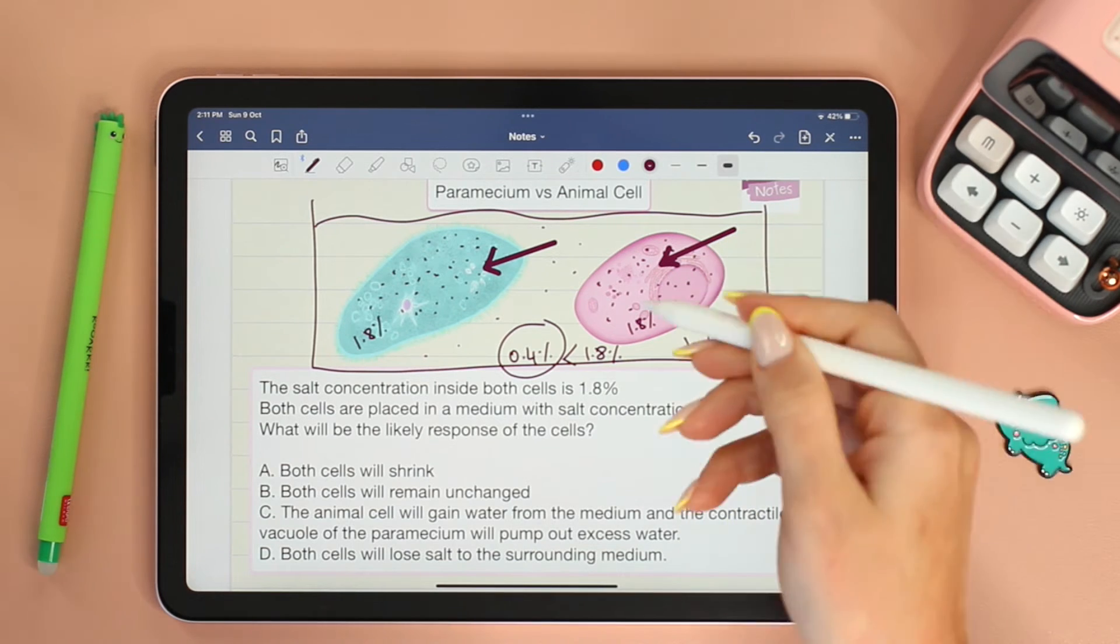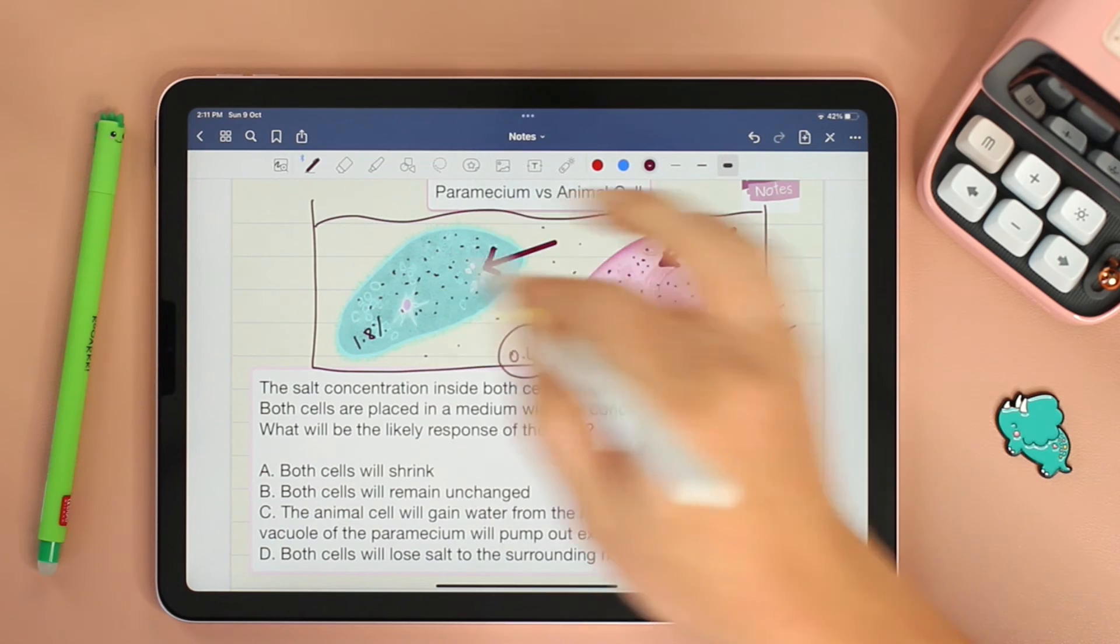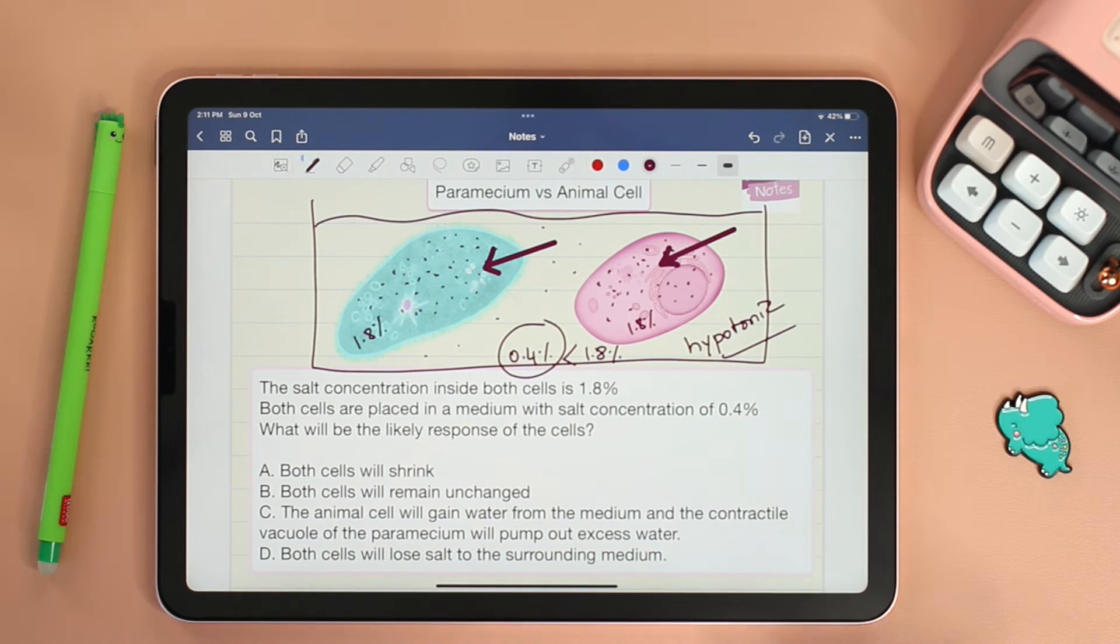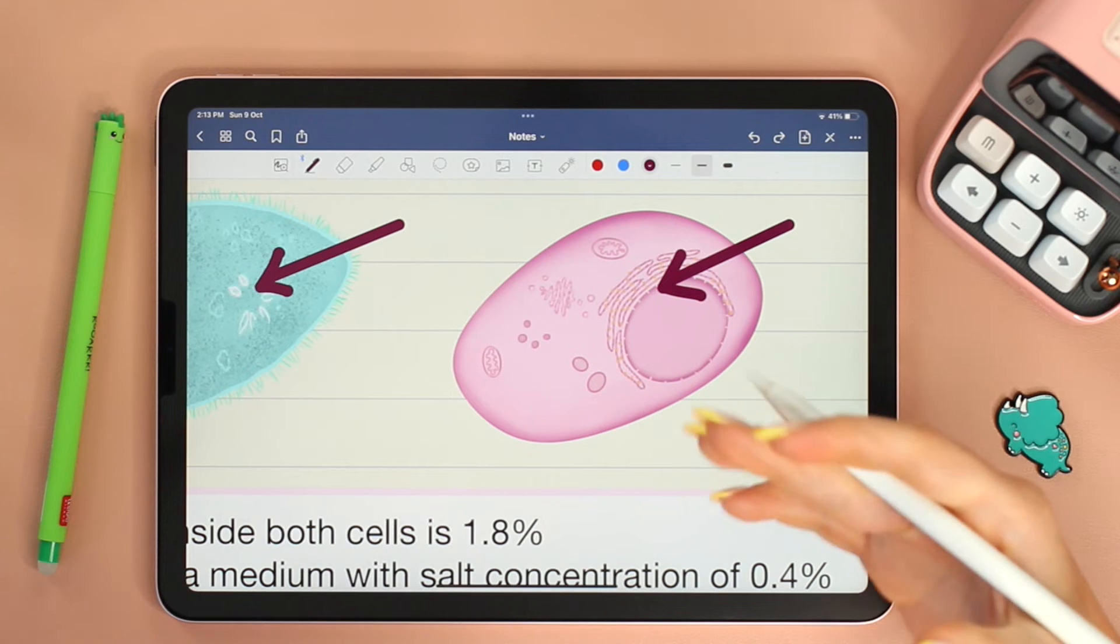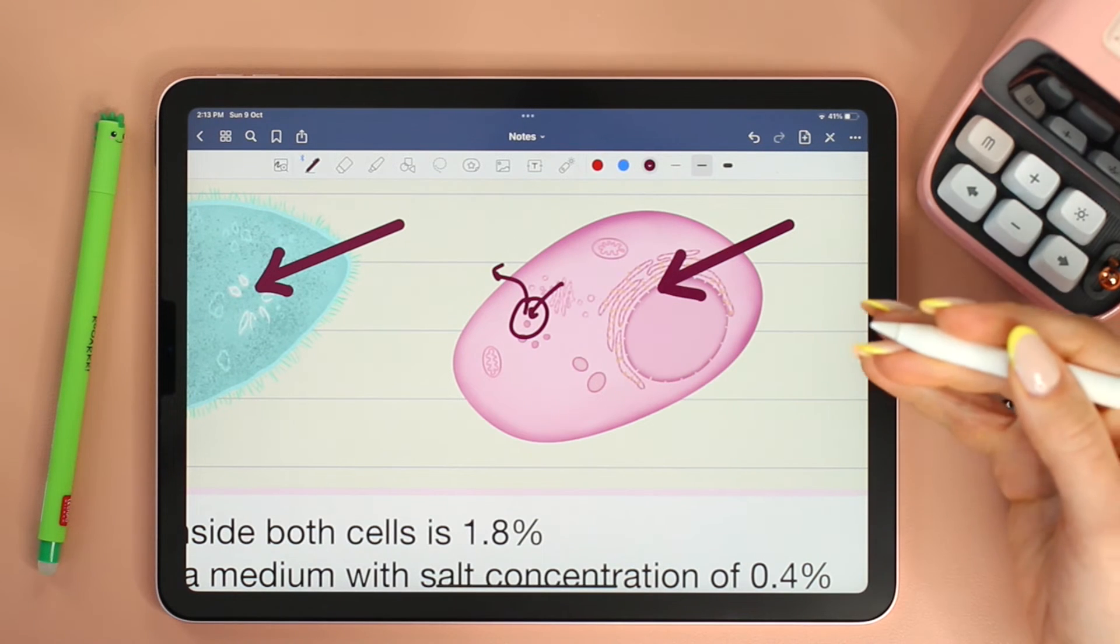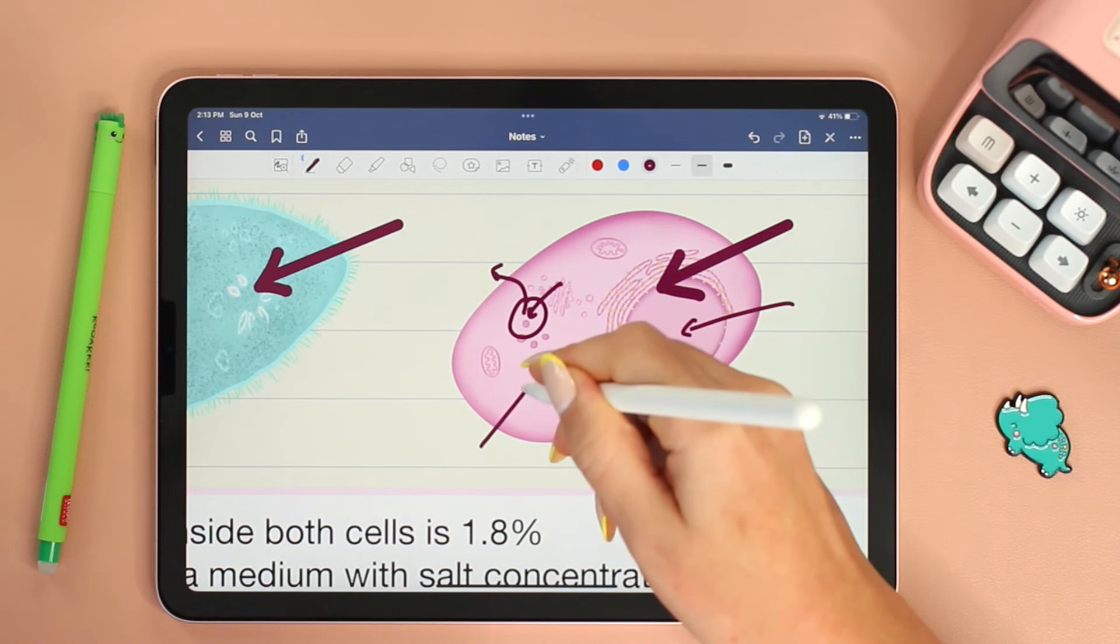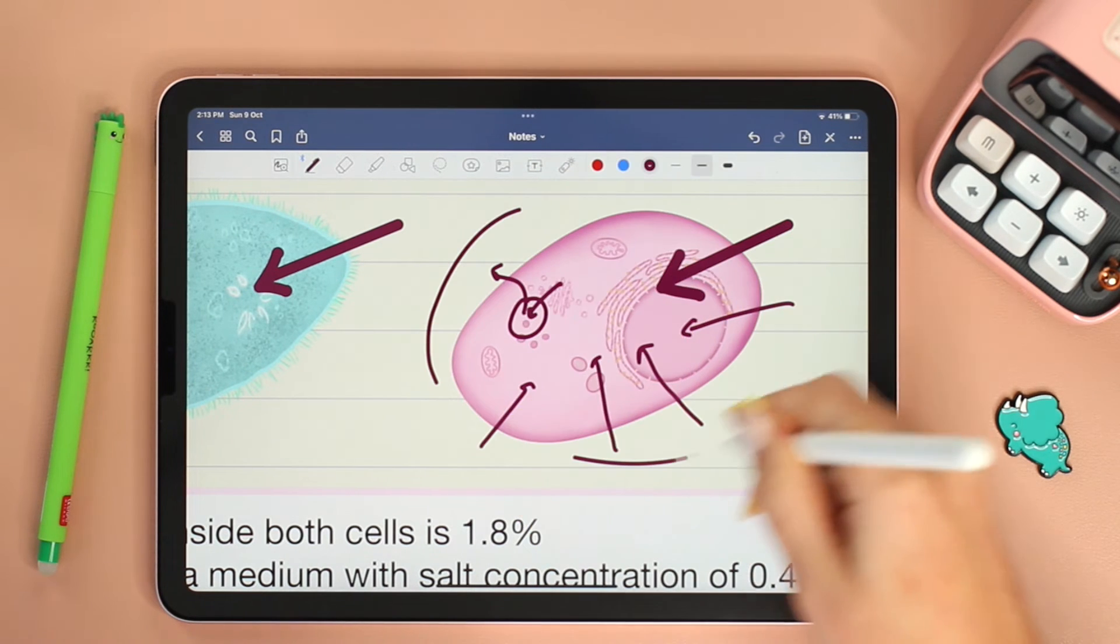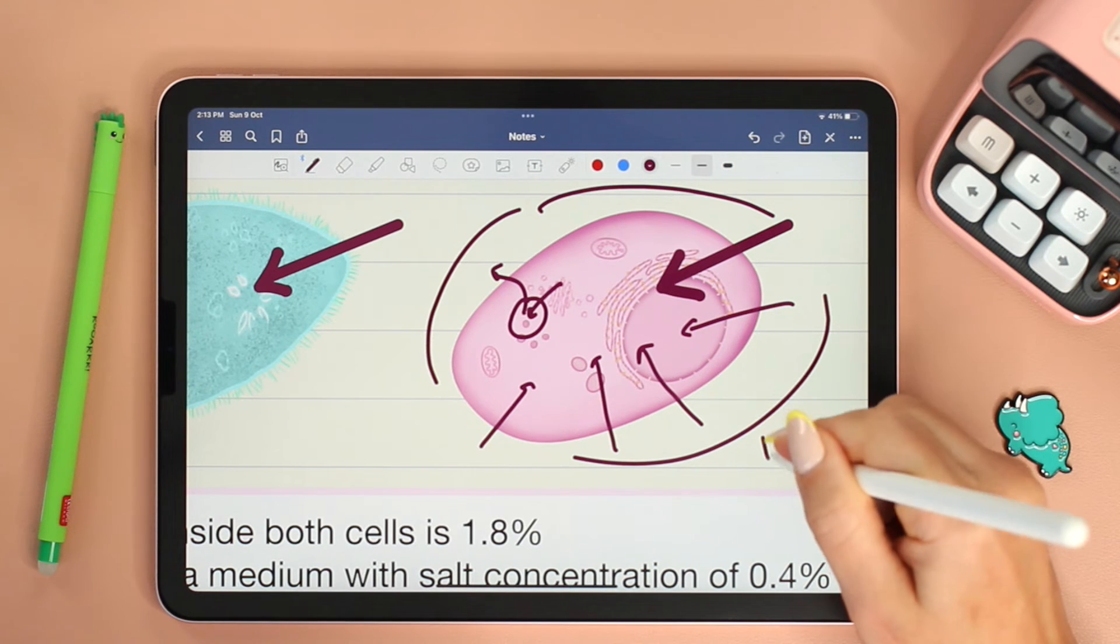Now that we established the net direction of water movement, we need to check the type of cells that we have. Let's start with an animal cell. Animal cells are not equipped with an organelle that can store and get rid of excess water. So all the water that will go in will fill up the cell and eventually the cell will swell and burst, what we call lysis.